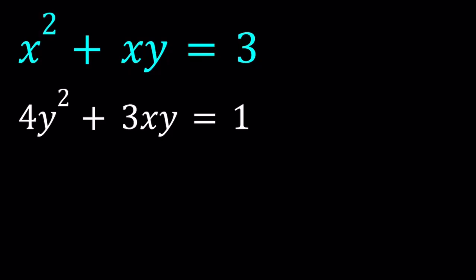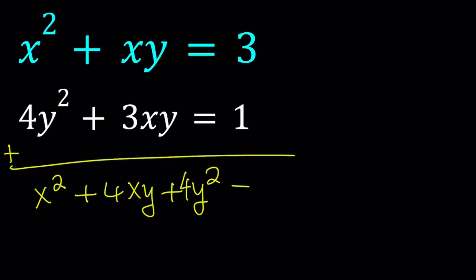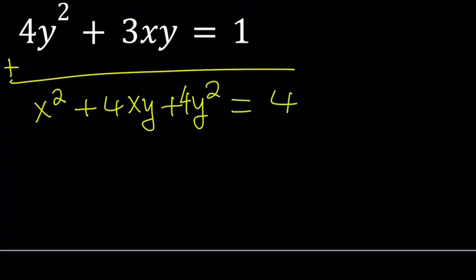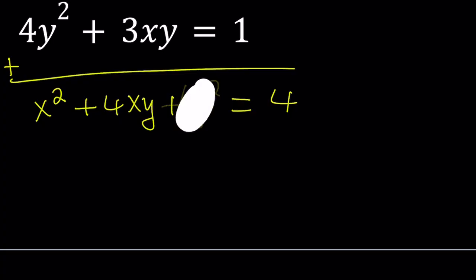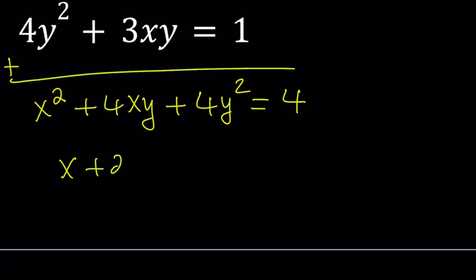You probably notice the same thing that I'm going to talk about. But if you add these equations up, you'll get x squared plus 4xy plus 4y squared equals 4. And the left hand side looks like what? The left hand side of this equation looks like a perfect square, doesn't it? It is x plus 2y quantity squared equals 4.